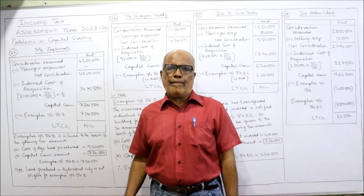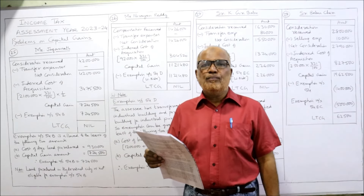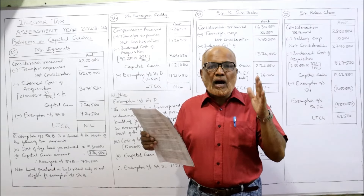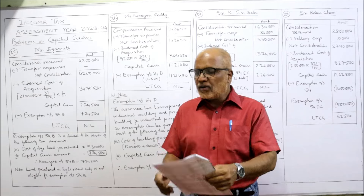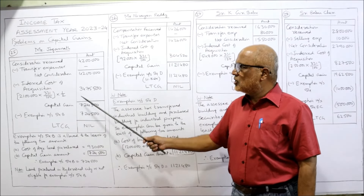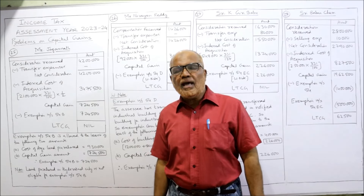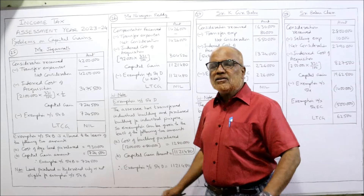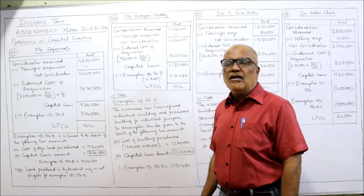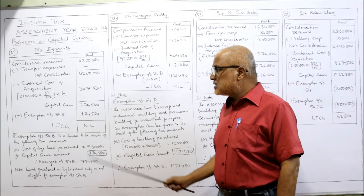The assessee sold one agricultural land and purchased another agricultural land, so he will get exemption under section 54B. The land was purchased before 1-4-2001, so the assessee can choose either the actual cost or FMV. Here FMV is 21 lakhs for the complete land, but only half of the land is sold. Consideration received: 42 lakhs. No transfer expenses. Indexed cost of acquisition: 21 lakh × 331/100 × 1/2 = 34,75,500. Capital gain: 7,24,500.